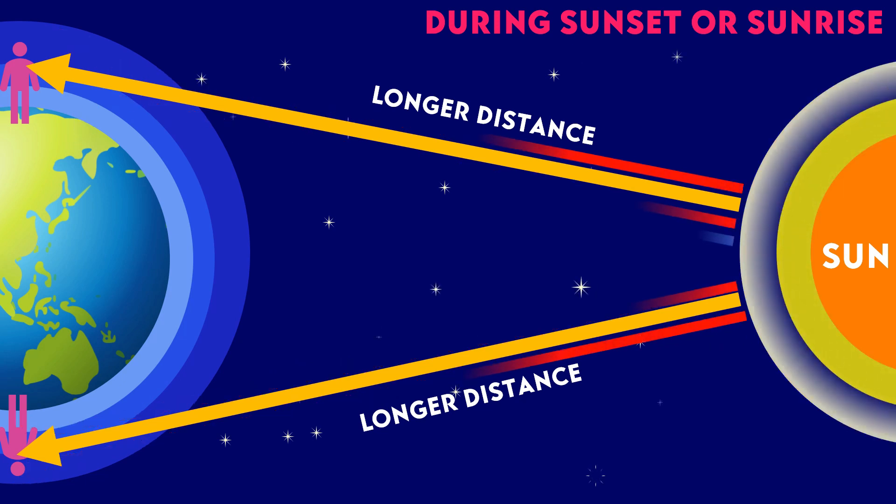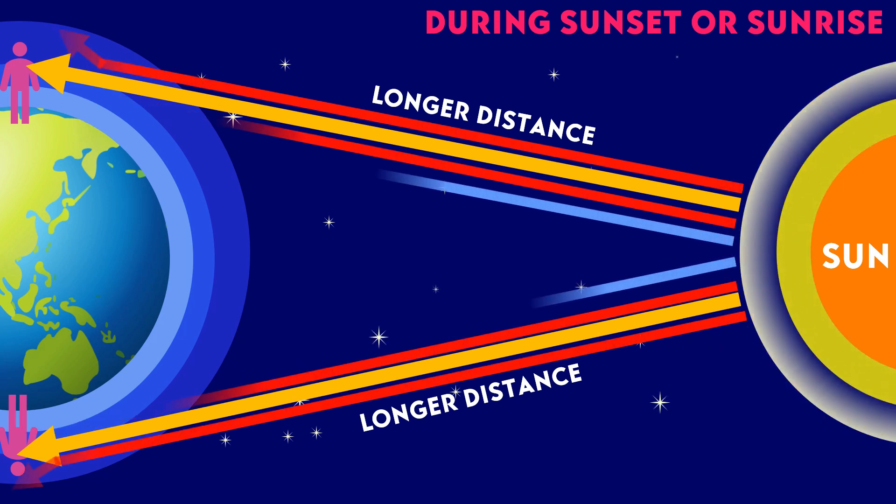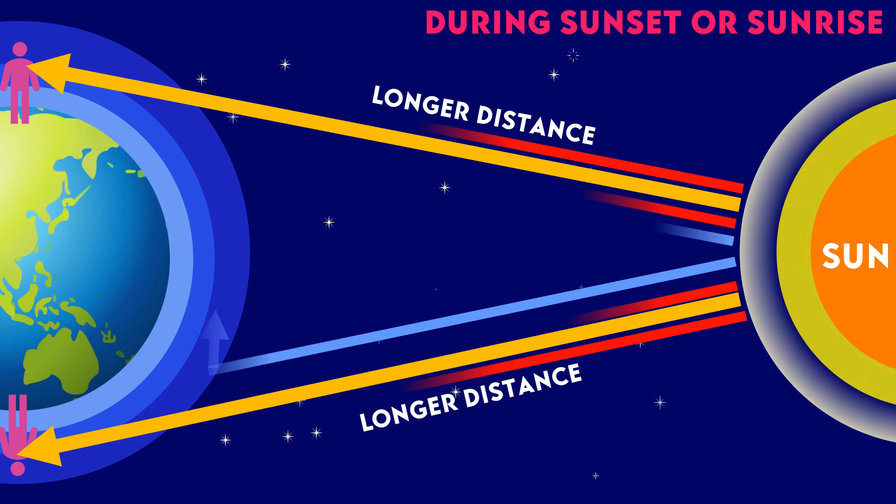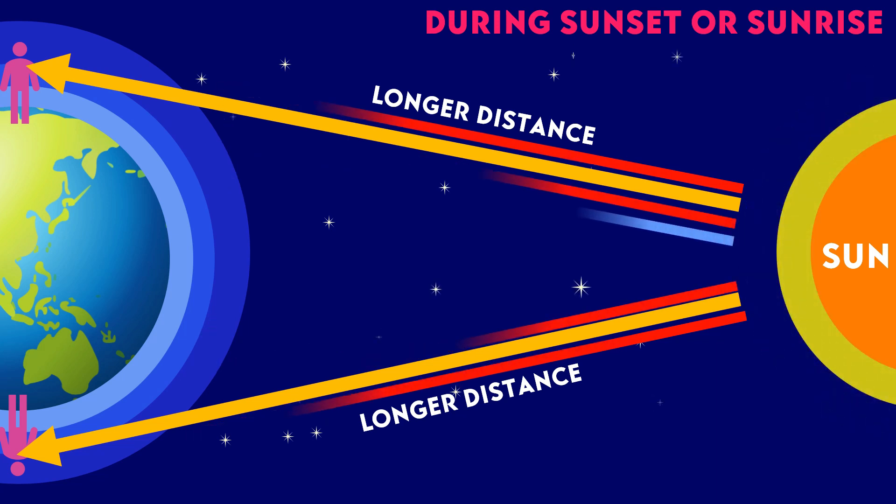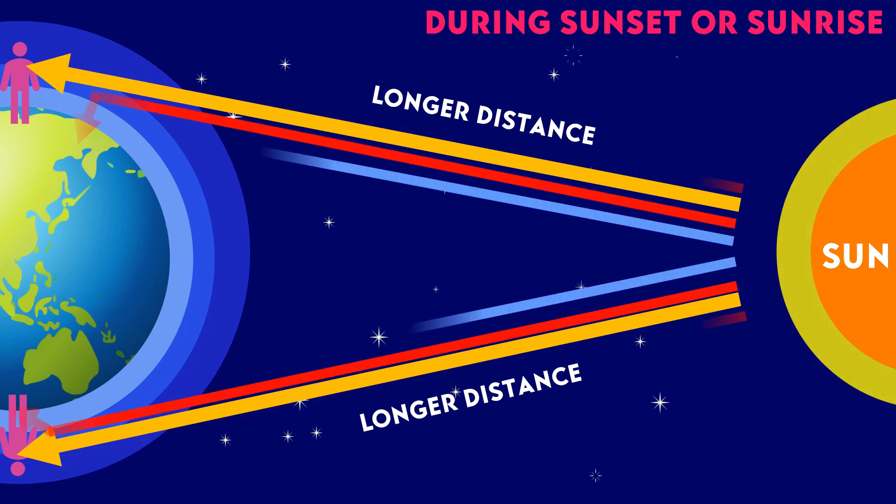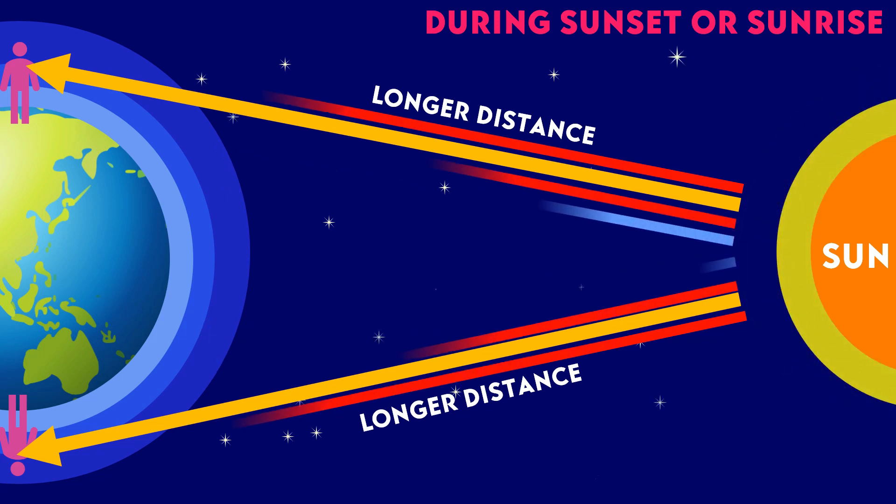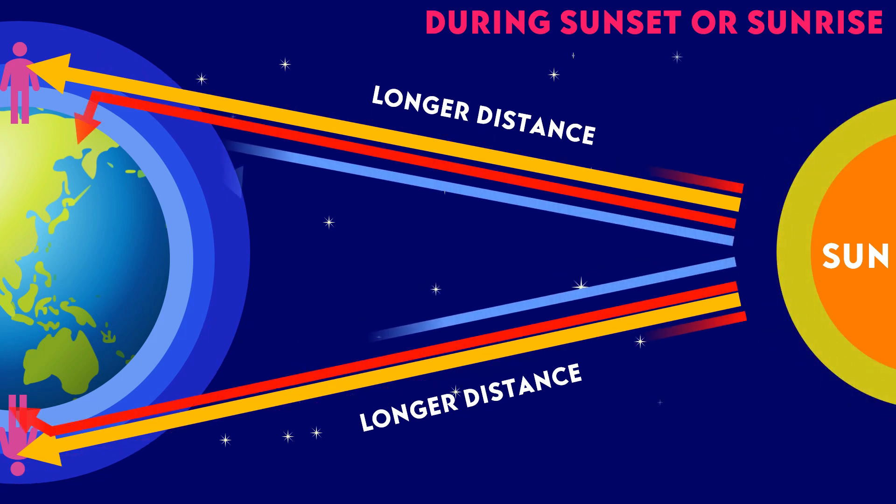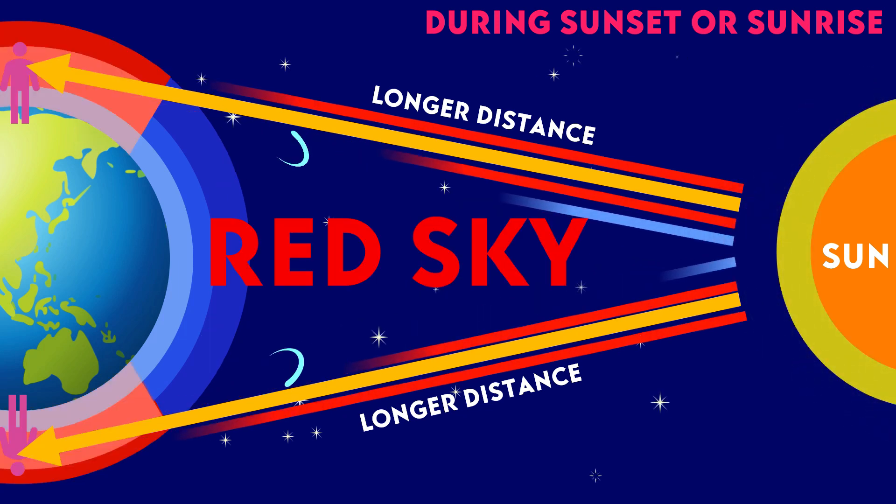Blue light with shorter wavelengths is scattered away and will disappear along the long distance. So, less blue light reaches the observer. This causes the sky to look reddish during sunrise and sunset.